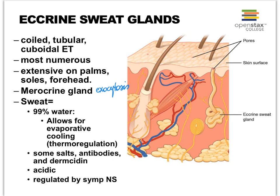Mixed in with that water we find some salts, which is why when you sweat a lot during a heavy workout or working outside in the summer, it's wise to replenish with something like Gatorade to replenish your minerals and salts. We also find inside the sweat things that defend us against pathogens, such as antibodies and something called dermcidin, which has proteolytic functions — in other words it can lyse proteins — and therefore it can damage pathogens, because they're all made up of proteins.